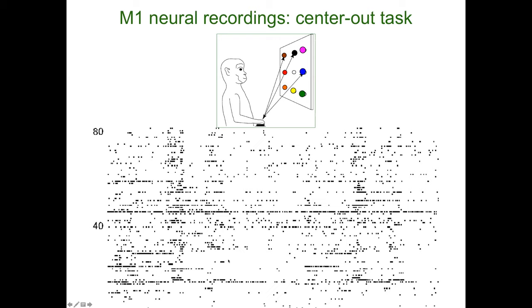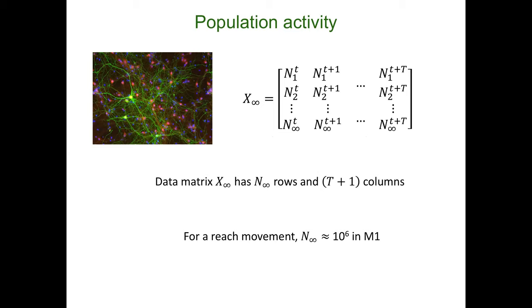This is a multi-electrode array that allows us to record on the order of 100 neurons. Here is a case where we had 80 neurons; this recording is about 20 seconds. Each row corresponds to a different neuron, and each tick is an action potential — a spike emitted by that neuron. What we would really like to do is monitor the full population activity, meaning record all the neurons that are being co-modulated by and participating in the task.